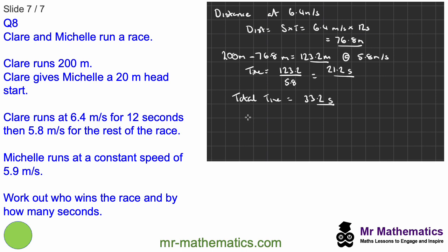Now we need to think about Michelle. Michelle runs a distance of 180 meters. So her time will be the distance 180 meters divided by a speed of 5.9 meters per second, which is 30.51 seconds. So we can see that Michelle wins by 33.2 take away 30.51, so 2.69 seconds.